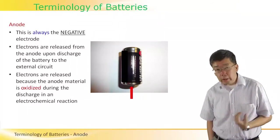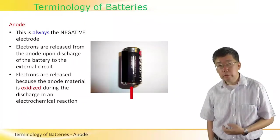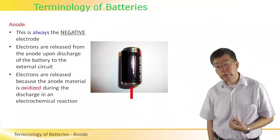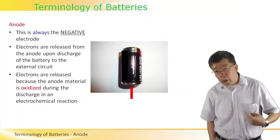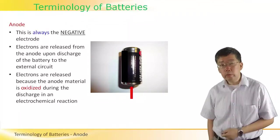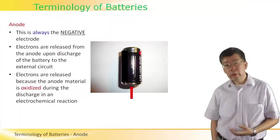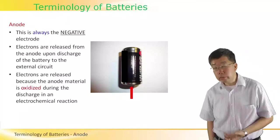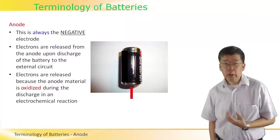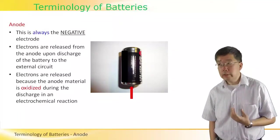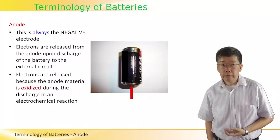In other words, negatively charged electrons will come out of the anode when the battery is being used, and that is why it's negative.